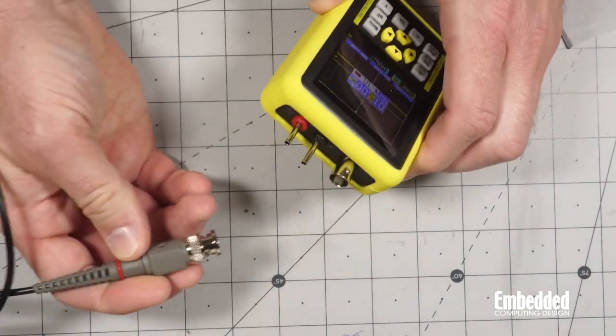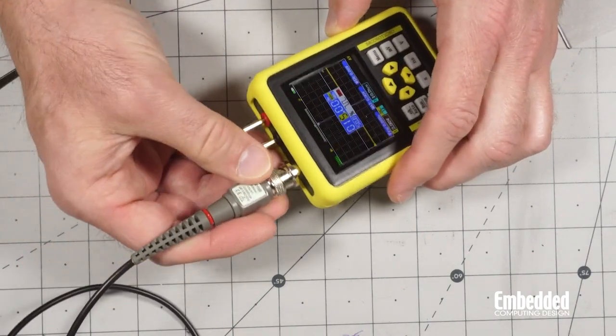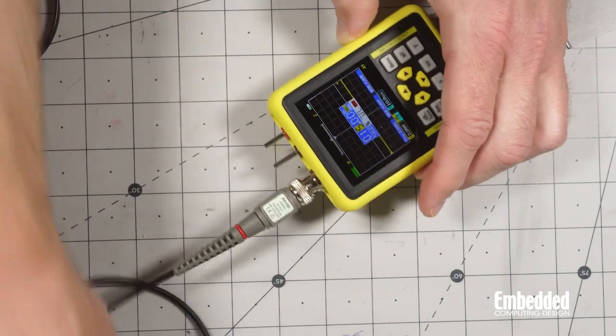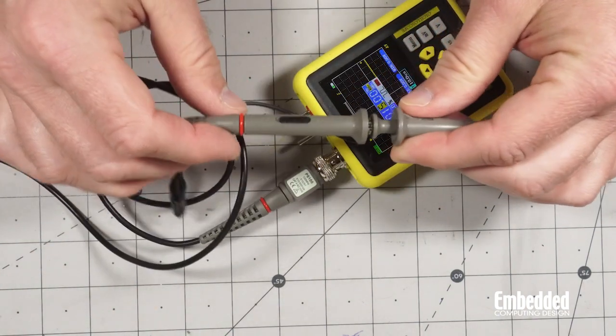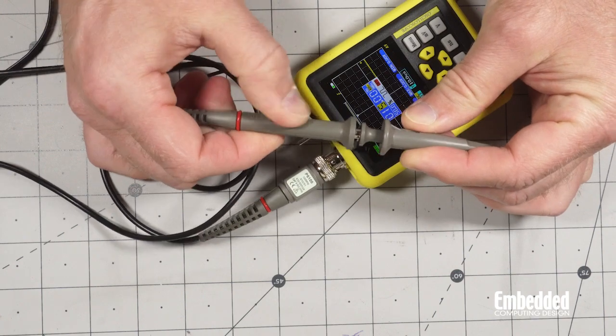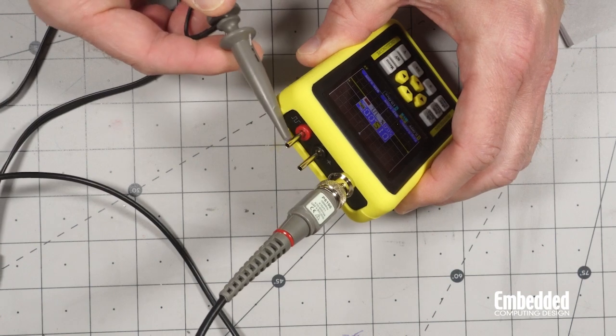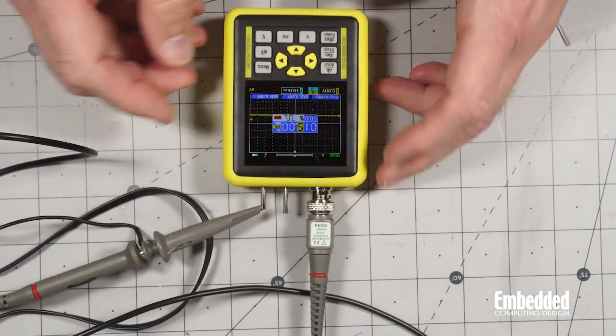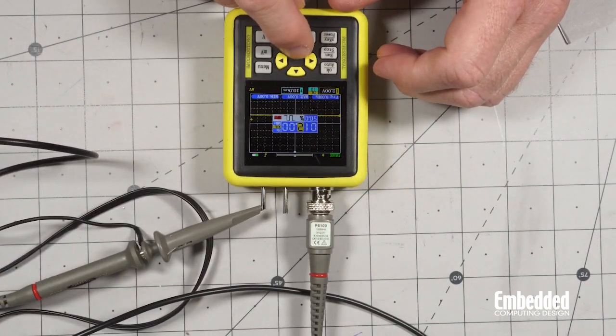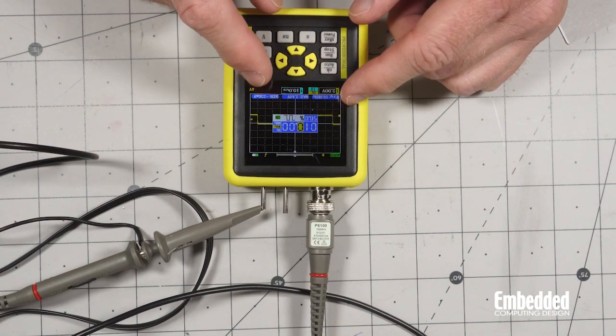So let's go ahead and plug in the included probes or included probe, I should say. So plug that in. Nice solid connector. It's got a 1 to 10 selector. You can select it there. We'll leave it at 1 for now. And we'll plug it into the output and voltage probe. So plug it in there. And let's do 10, 10 kilohertz for now.